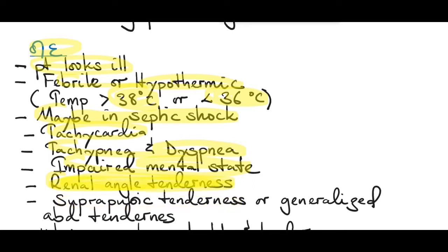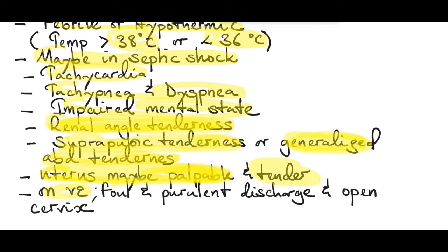There will be suprapubic tenderness because of the infected uterus, or generalized abdominal tenderness because of peritonitis. The uterus may be palpable due to incomplete abortion with retained products of conception — it might be boggy and tender due to inflammation and infection. On vaginal examination, there will be foul and purulent discharge and an open cervix.